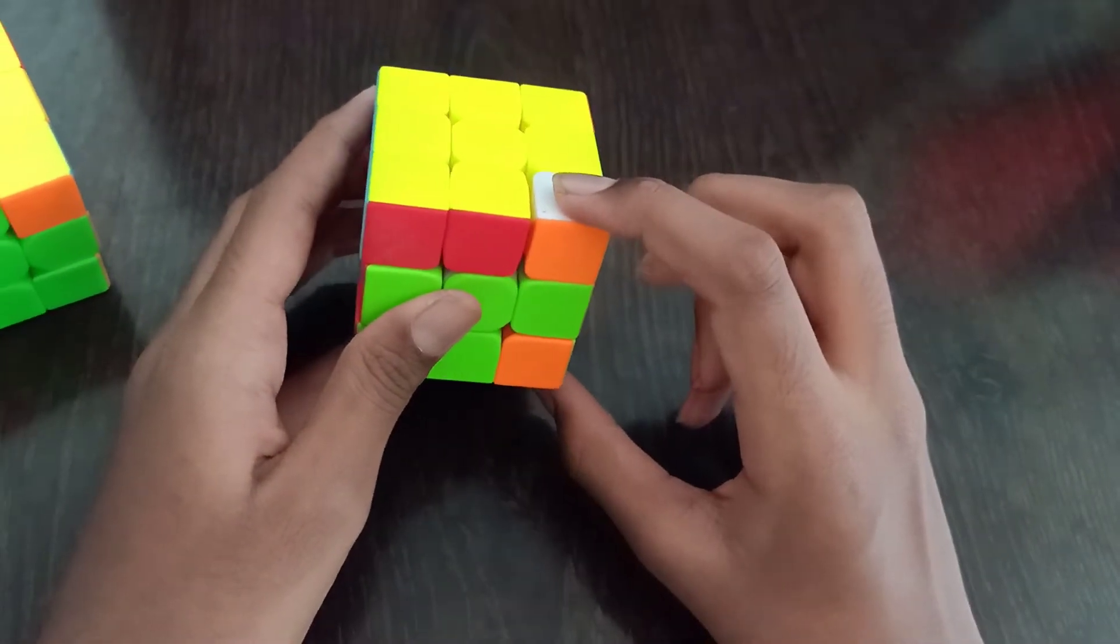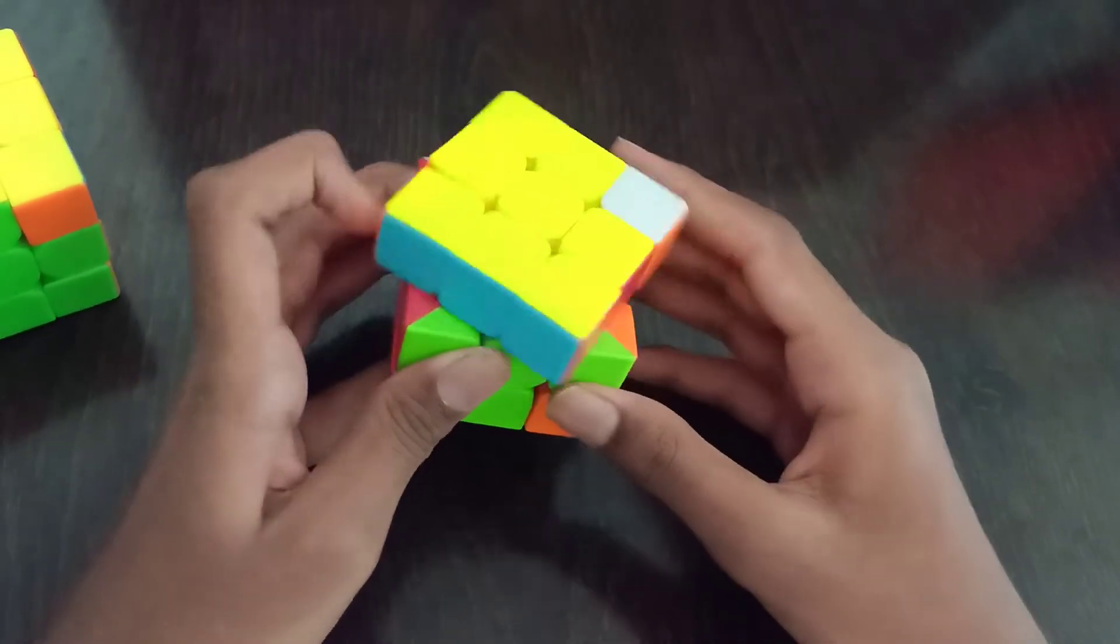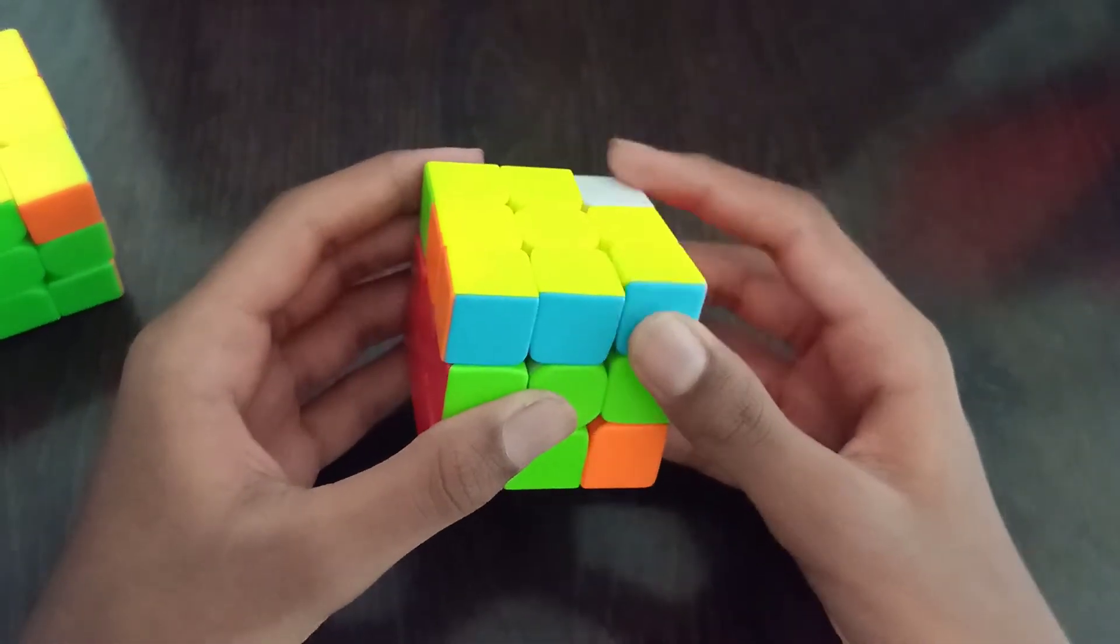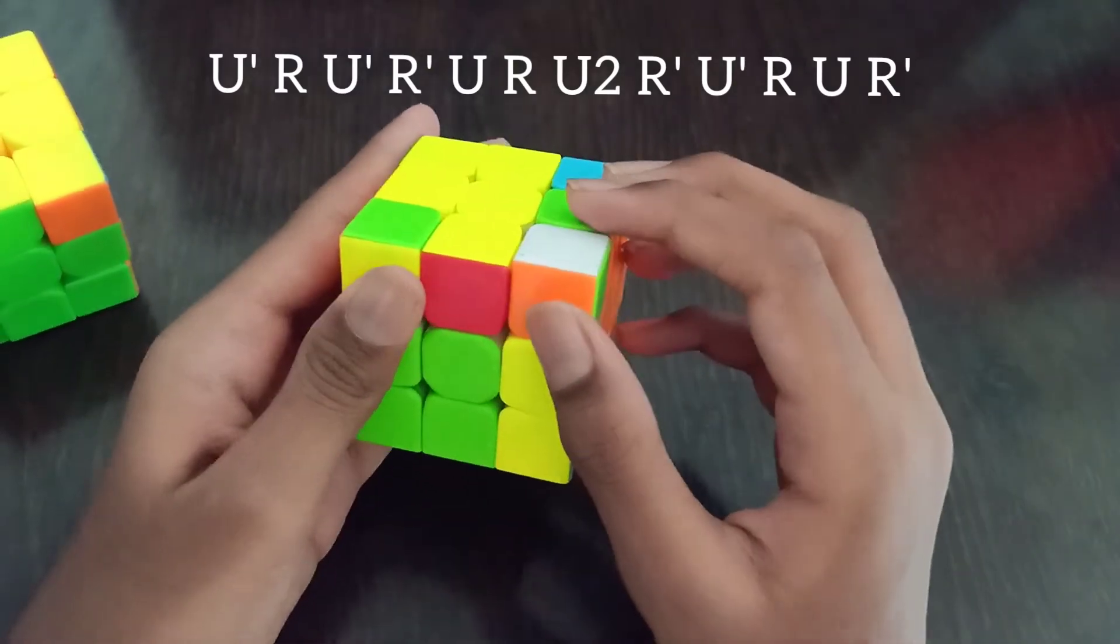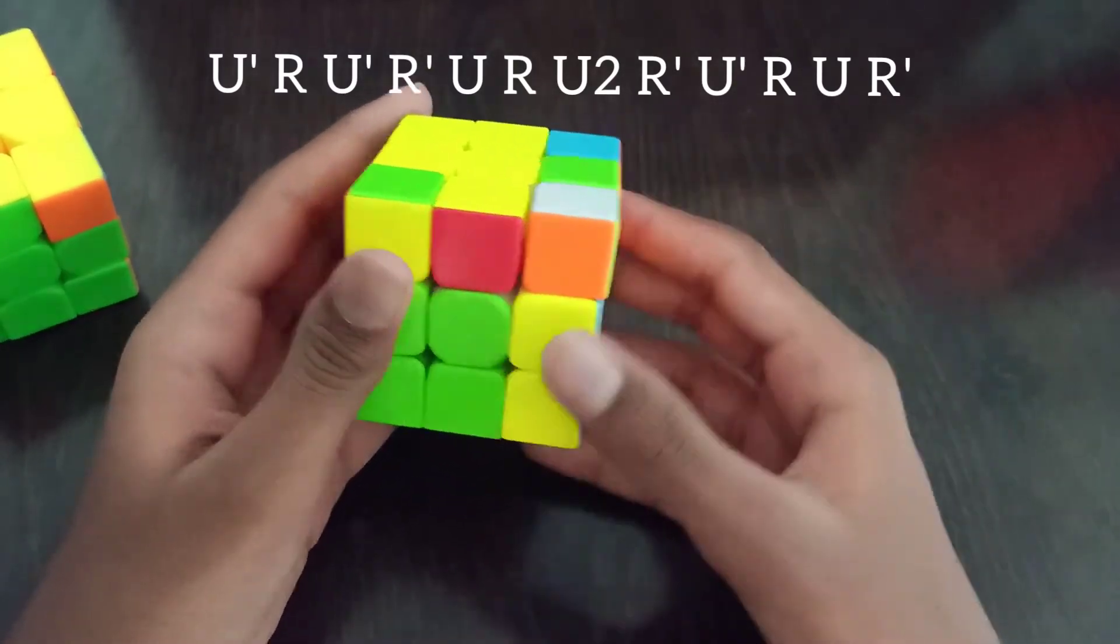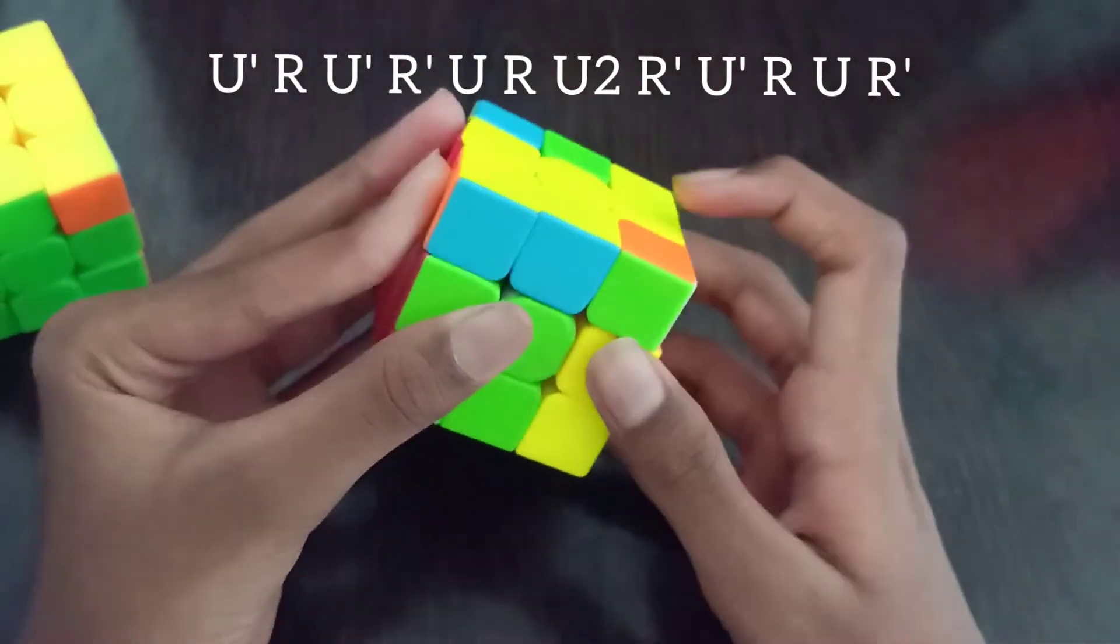For the third case, when we have the bottom color on the upside, we separate it like this and do R U' R' and just solve this easy F2L case by R U to R' and insert.